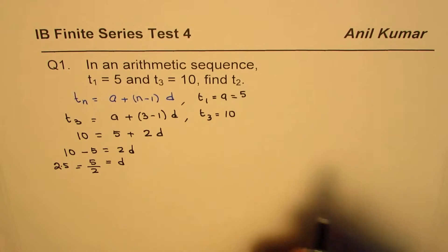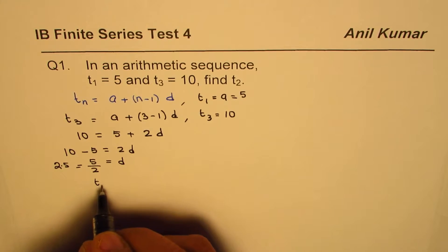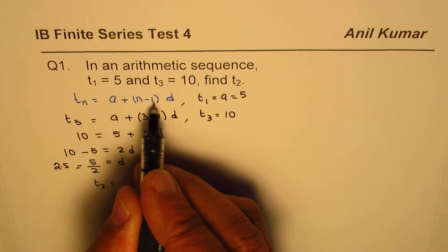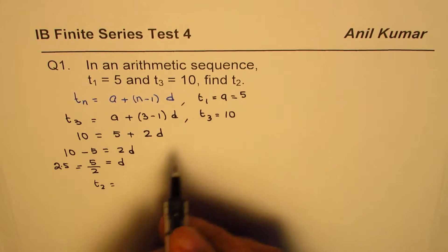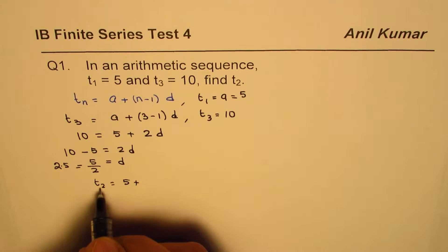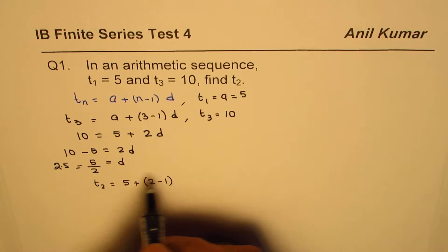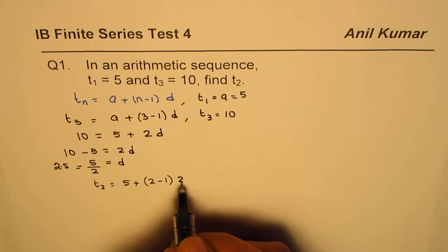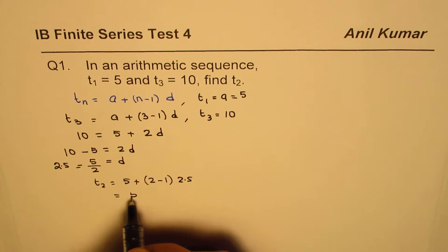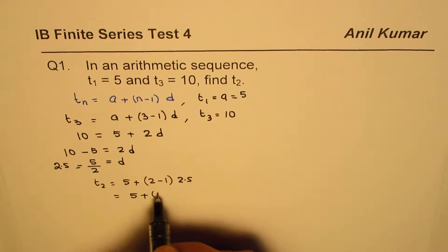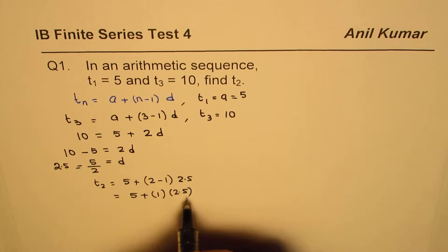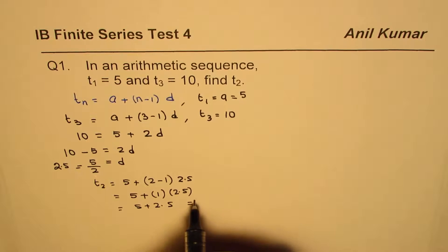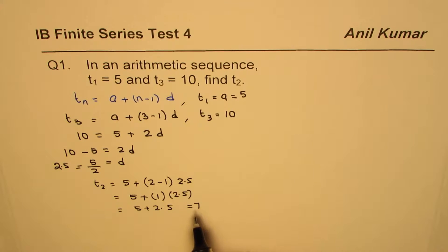Let's find the second term, which is what we need. Applying the same formula for t2: a + (n-1)·d = 5 + (2-1)·2.5. That gives us 5 + 1 × 2.5, which equals 5 + 2.5 = 7.5. Wait — 5 + 2.5 equals 7. So the second term in the series is 7.